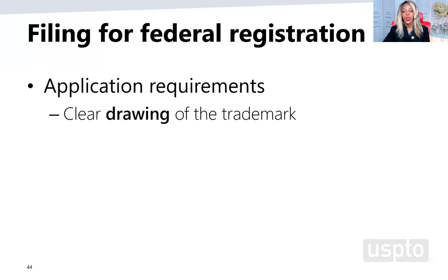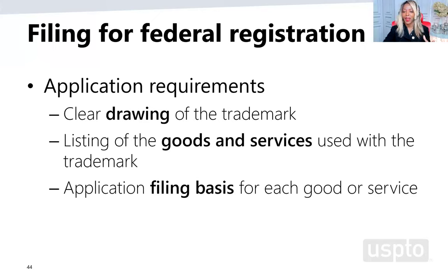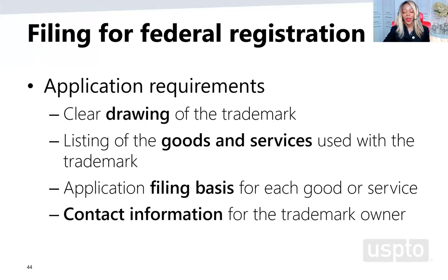When you file your application, you really only need five things: a drawing — your depiction of the mark, whether it's wording, a logo, a color, or a motion mark; a listing of the goods and services you're using the mark to identify; the filing basis — are you using the mark now or do you intend to in the future; your contact information, since all correspondence goes to the email in your application; and your filing fee.